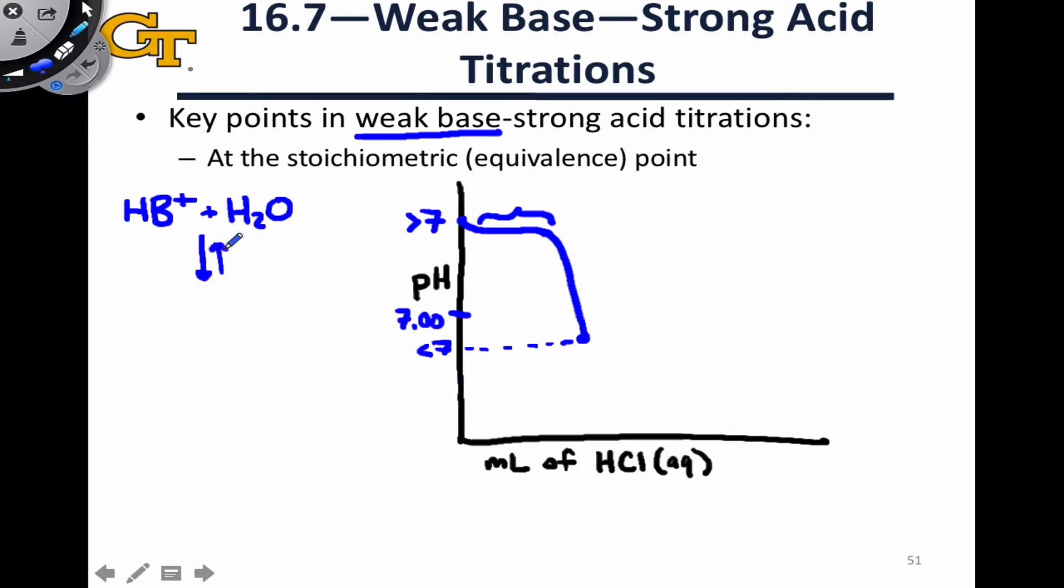The HB+ that's left behind when the HCl reacts with all of the weak base B reacts with water in a reversible way to form B, neutral B, the conjugate base, and H3O+. And just as we saw in the weak acid-strong base titration, it's the production of this H3O+ that really drives the pH change. In this case, it's a decrease in pH relative to 7, resulting in a solution at the equivalence point that has a pH less than 7.